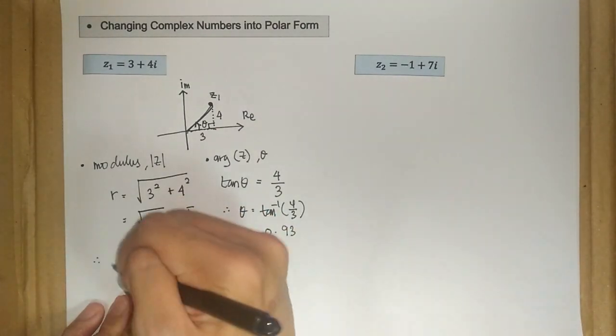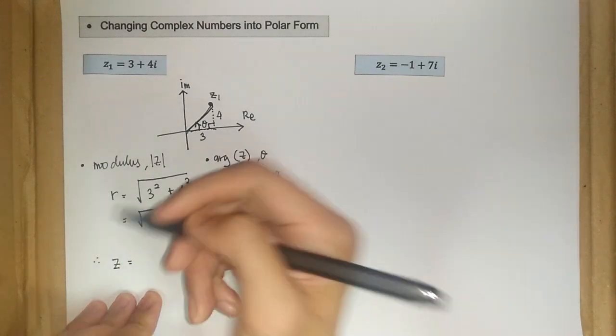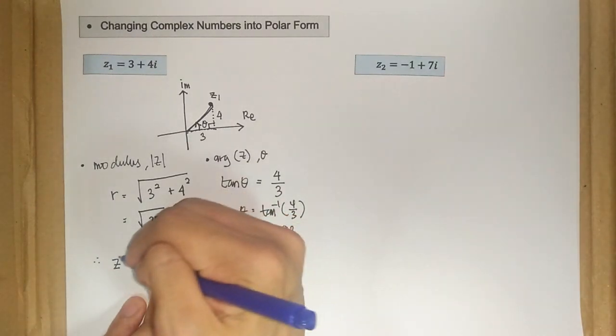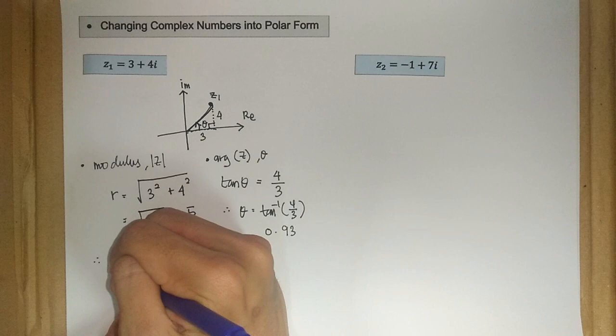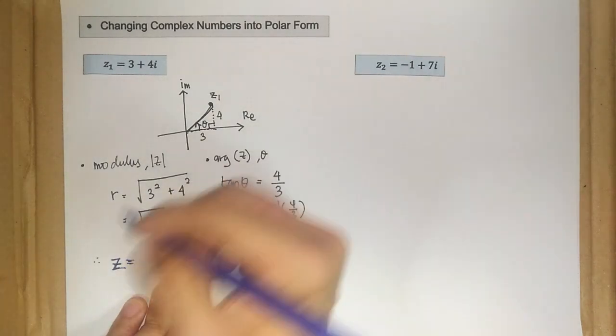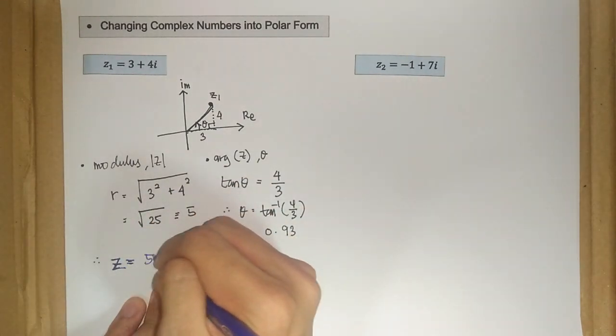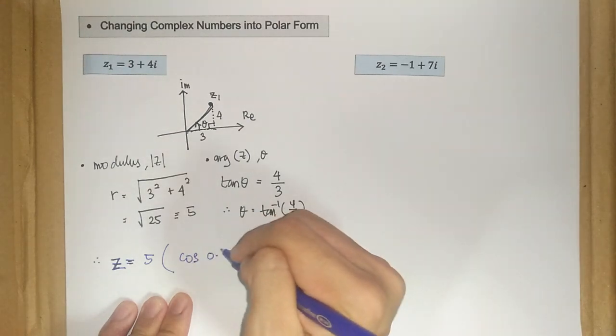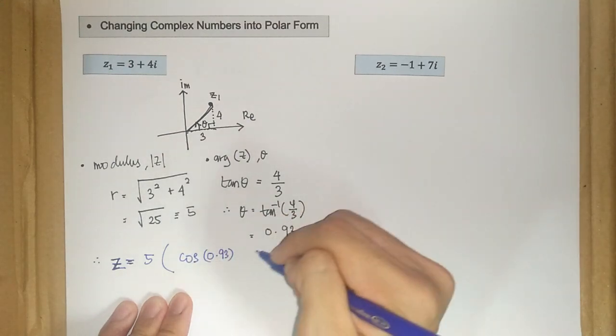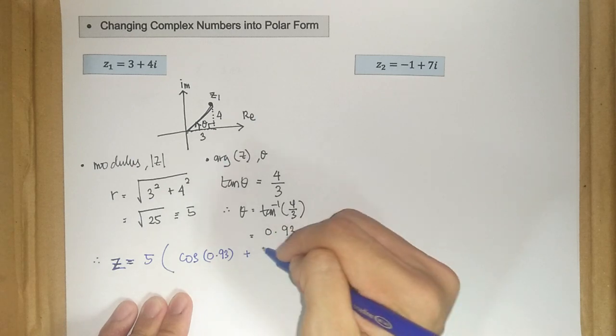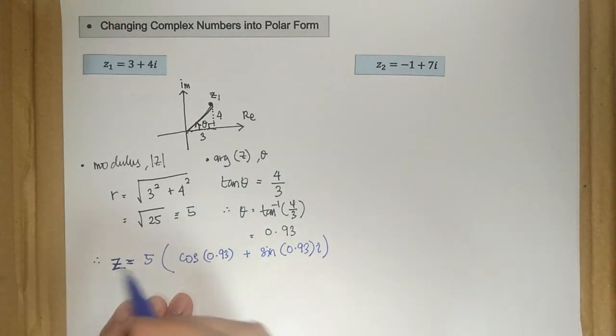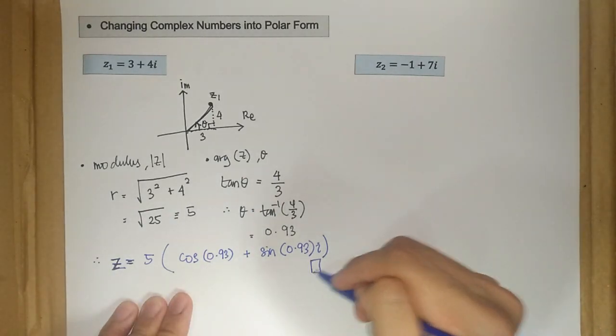So therefore, z is equal to, let me change my marker. So z is equal to r equal to 5 times cos 0.93 plus sin 0.93 i. So this is the answer for the first example.